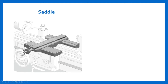The saddle is an H-shaped casting supported over the bed ways and slides on the bed. The saddle supports the cross slide, compound rest, and tool post. The saddle can move along the ways either manually or by power feed. It can be locked at any position to carry out a facing operation.